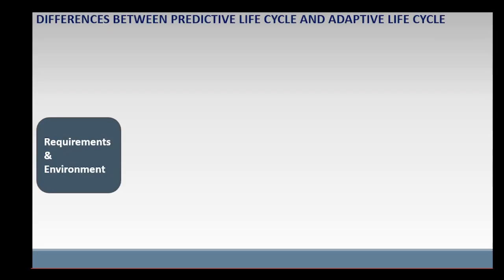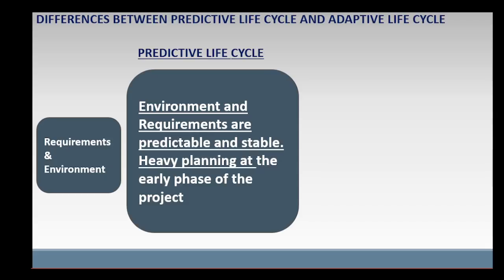These differences are in terms of requirements and environment. Predictive life cycle is used in situations where the environment and the requirements are predictable and stable. Heavy upfront planning is done at the early phase of the project. For example, all the requirements of a house, including architectural and structural design, are predictable and are planned in advance.